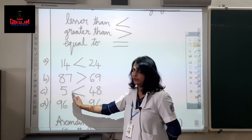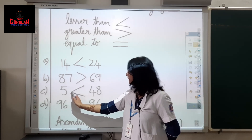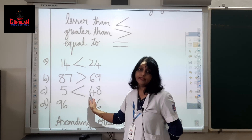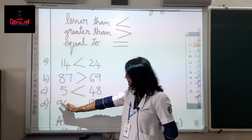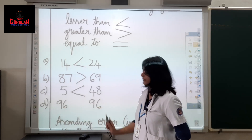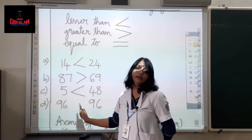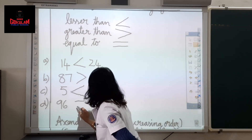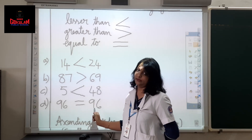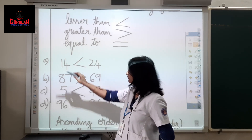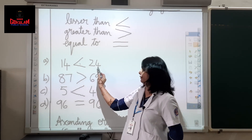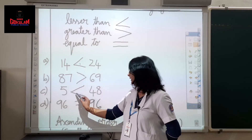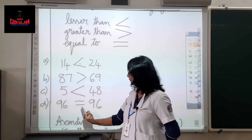The pointed end always faces the lesser number; the wider or open end always faces the greater number. Next example: 96 and 96 — both are the same, both are equal. So we use the equal sign. We read: 96 equal to 96. Let us read all once again: 14 less than 24, 87 greater than 69, 5 less than 48, 96 equal to 96.